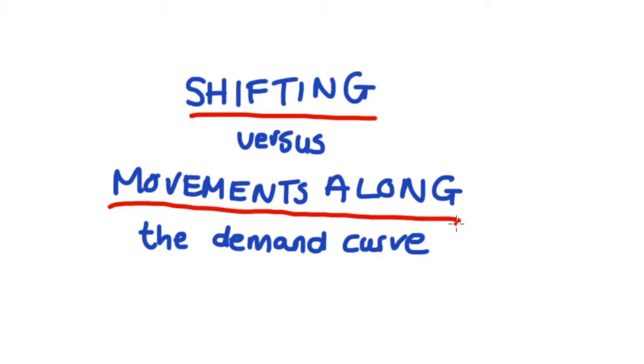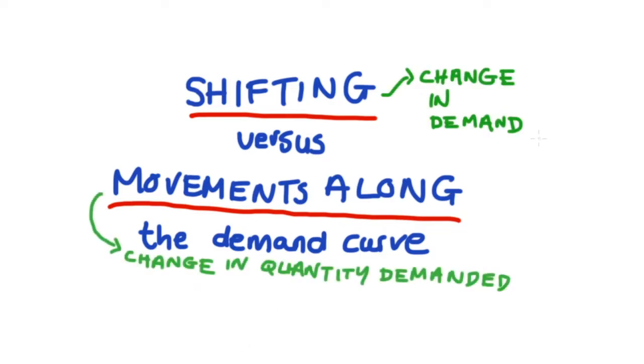I'm going to be talking about these two different types of changes in two different ways. When we shift the demand curve, we're referring to changes in demand. When we're moving along the demand curve, we're talking about a change in the quantity demanded.